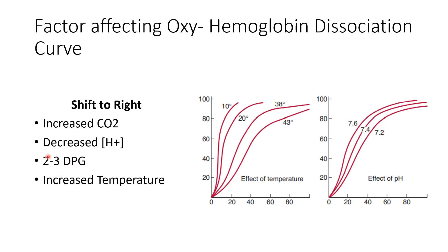2,3-DPG (2,3-diphosphoglyceric acid) is a metabolic product of glucose oxidation. Whenever 2,3-DPG is elevated due to metabolism, the curve shifts to the right. Similarly, increased temperature also shifts the curve rightward. These are the conditions — increased CO2, decreased pH, increased 2,3-DPG, and increased temperature — that shift the curve to the right, promoting oxygen unloading.